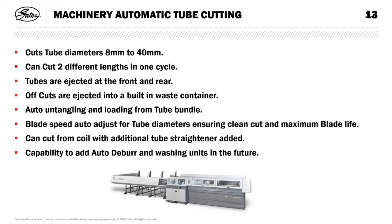The first operation in tube manufacturing is cutting the tube. We have an automatic saw that can cut between 8mm and 40mm diameter. It can cut two different lengths during one cycle, which makes more use of the material and less wastage — one job can come out the front of the machine and another part number out the back. Offcuts are automatically dropped into a waste container. The operator loads the bundle of steel, the machine untangles it and feeds it through to the cutting head. The cutting speed adjusts itself to minimise burrs. It can also cut from coil, but today we only use it on straight lengths, which normally come in 6m lengths.